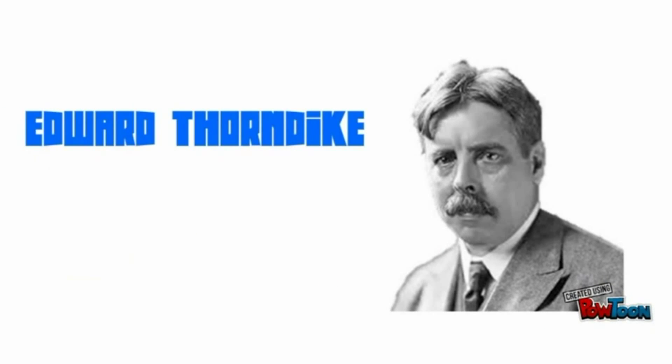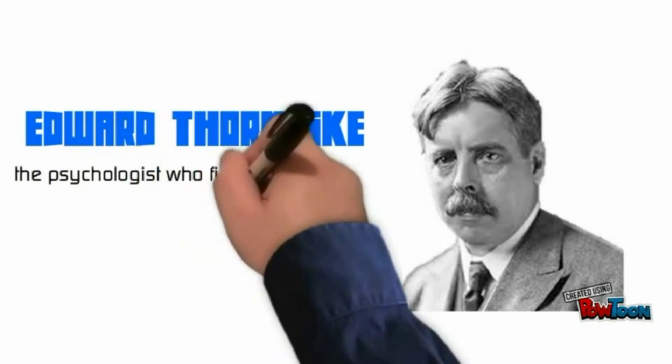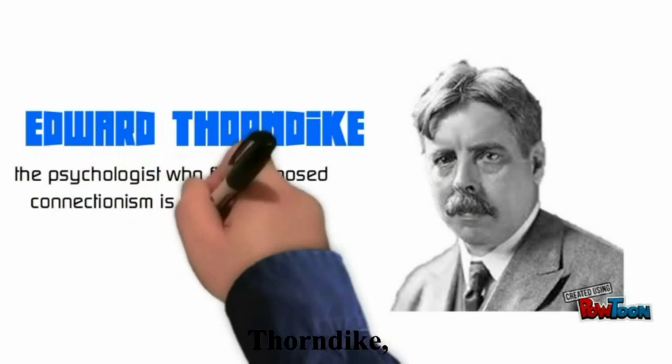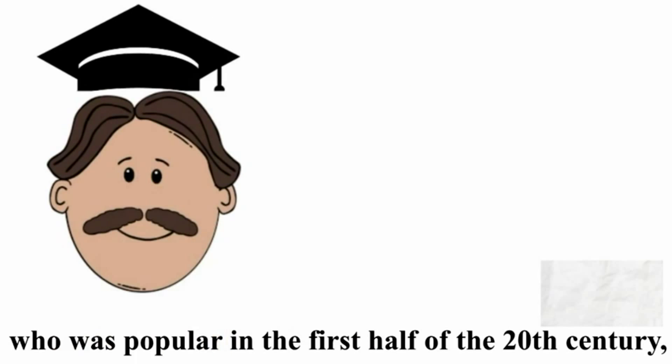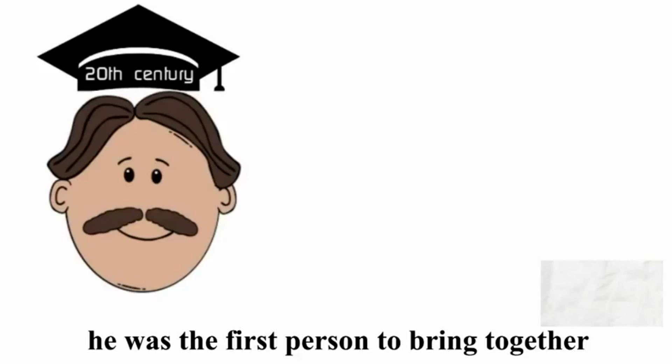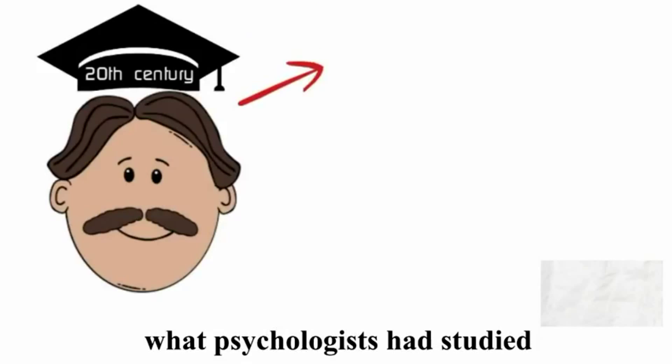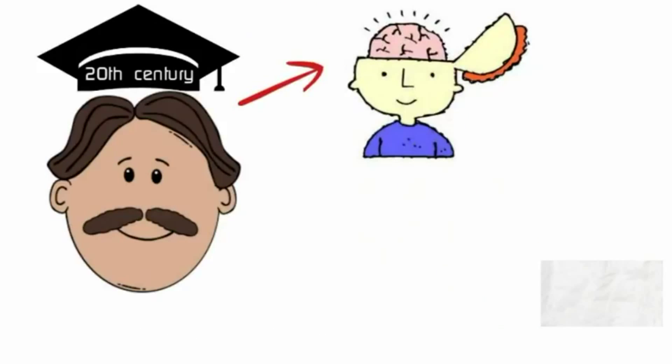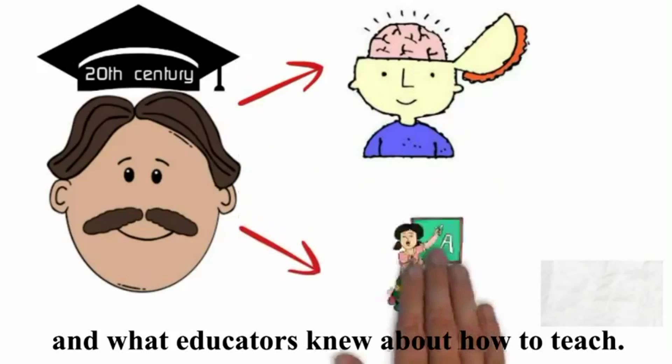Edward Thorndike was the psychologist who first proposed that connectionism is key to learning. Thorndike, who was popular in the first half of the 20th century, was the first educational psychologist. That is, he was the first person to bring together what psychologists had studied about how the human mind works and what educators knew about how to teach.